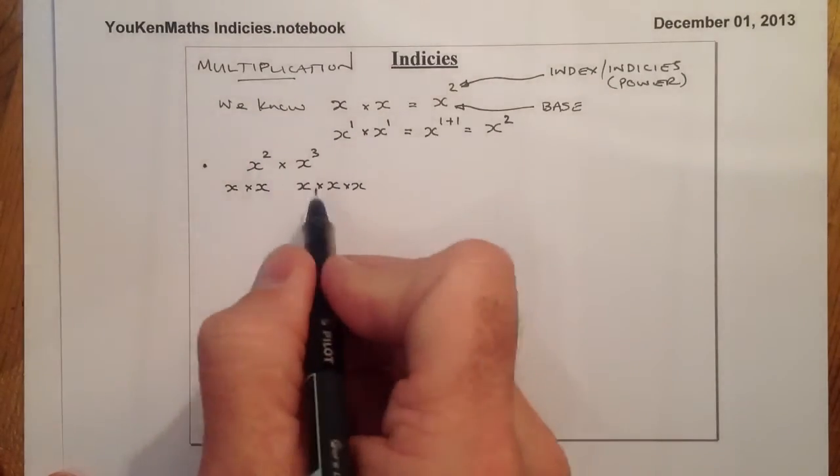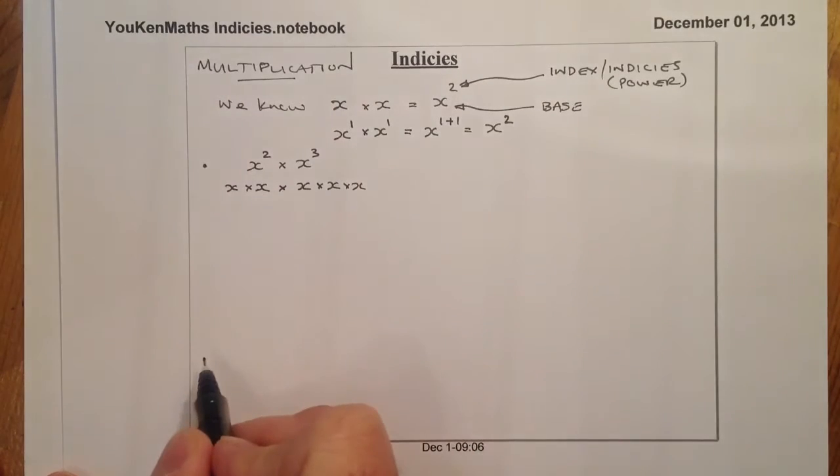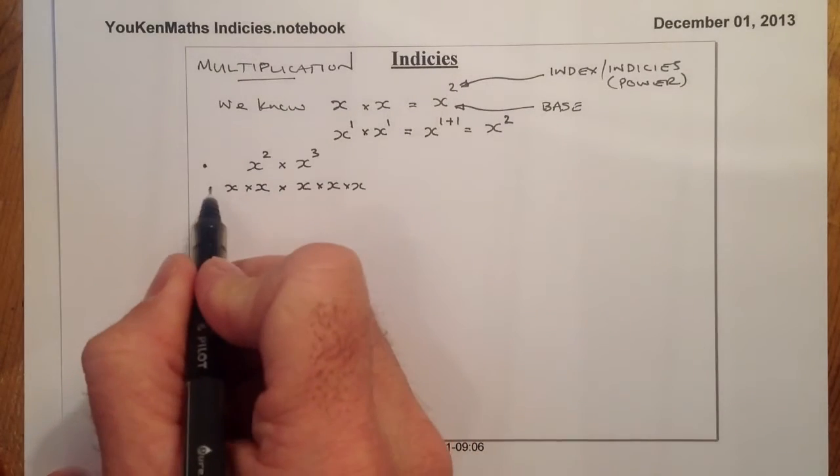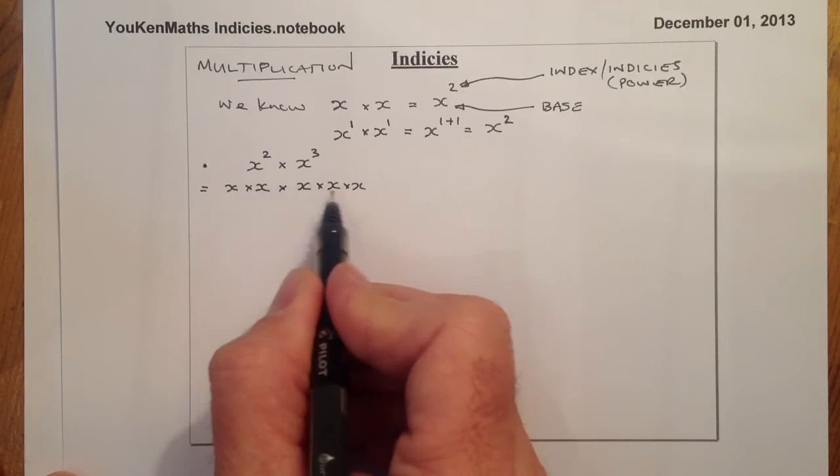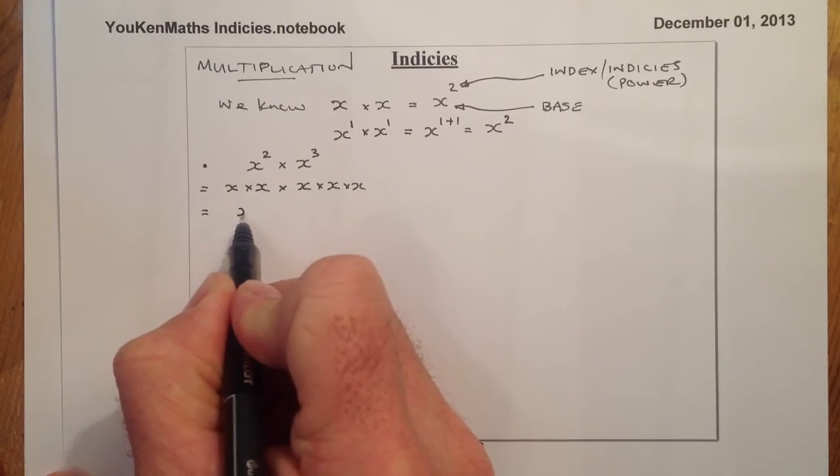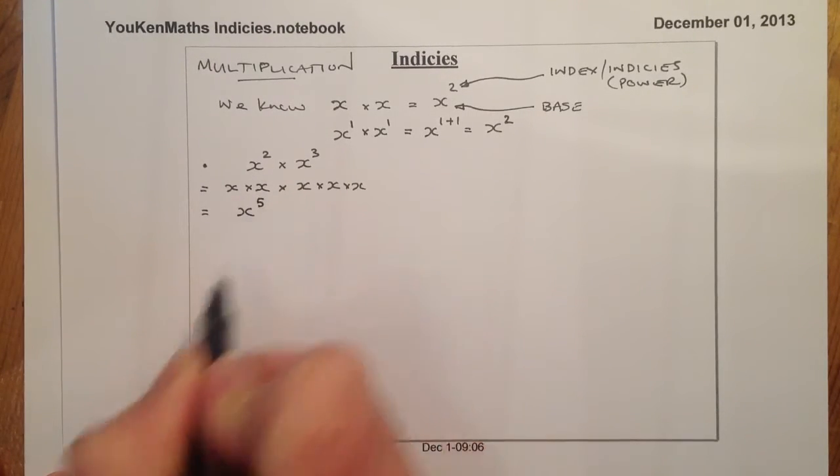Now if I'm multiplying these together, I'm going to have another multiplication sign in there. So if I look at what I have, I've got 5 x's that are there. And that means that's going to be x to the power of 5.